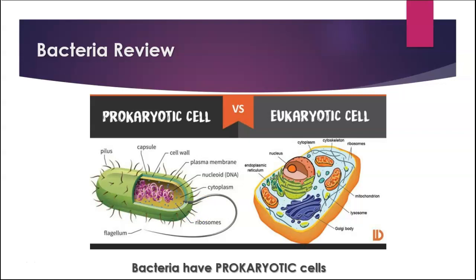So just a little bit of review. Prokaryotic cells are very small compared to eukaryotic cells. They do not have nuclei or other membrane-bound organelles. They do have DNA and ribosomes. They have cytoplasm and a cell wall. Some of them have internal membranes, and they can have structures like pili or flagella. But they're a whole lot smaller than eukaryotic cells — much simpler.